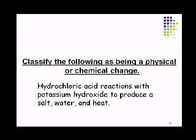Hydrochloric acid reacts with potassium hydroxide to produce salt, water, and heat. This is a chemical change because heat is being released — making it an exothermic reaction, showing a change in energy. We started with hydrochloric acid and potassium hydroxide and finished with salt and water — two reactants forming two new products.